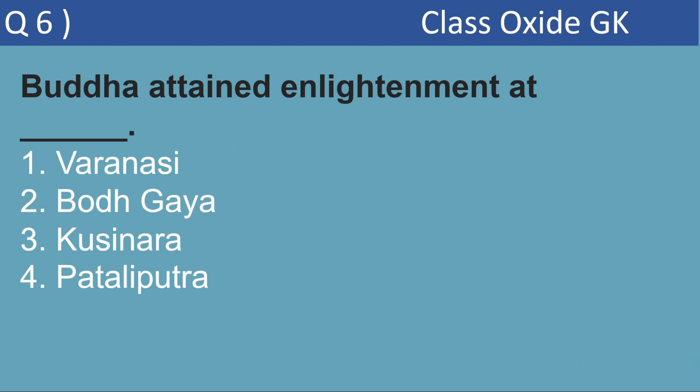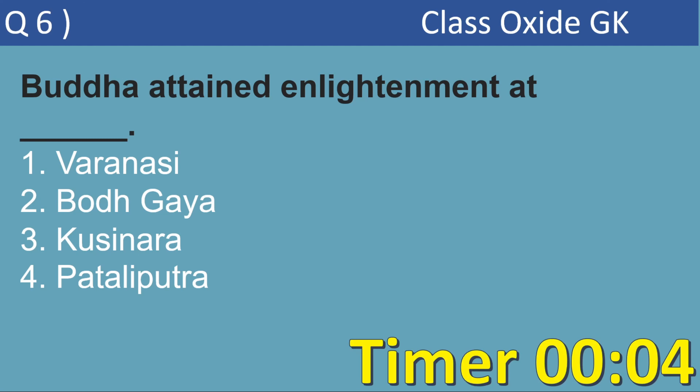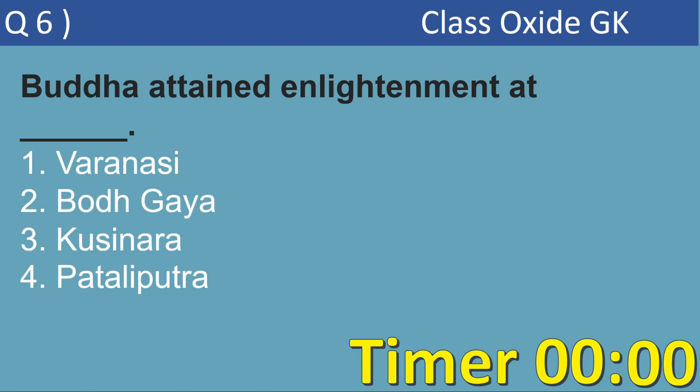Next MCQ. Where did Buddha attain enlightenment? Options are Varanasi, Bodhgaya, Kusinara, Patliputra. This question is very common and has appeared many times in SSC, railway, UPSC, and state PCS exams. The answer is option 2, Bodhgaya, which is in Bihar.